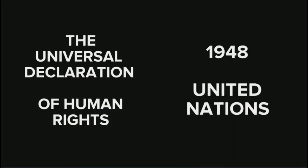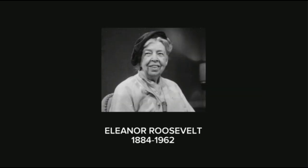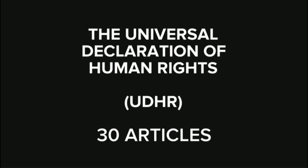In an attempt never to repeat the atrocities of the Second World War, the United Nations in 1948 presented the Universal Declaration of Human Rights. Eleanor Roosevelt was a key lobbyist for this declaration, and with her help a new chapter in human rights history was formed. The Universal Declaration of Human Rights, or UDHR, consists of 30 articles containing the human rights that are bestowed upon all of us today.